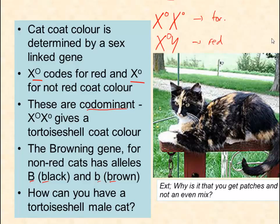One of the ways is that they can have a chromosomal mutation. You might get a male which is X-O X-o Y. It would be an infertile cat because its sex chromosomes won't be able to pair up properly at meiosis. But nonetheless, it will be male and it will be tortoiseshell.